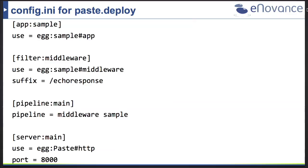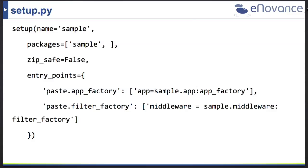For Python to know that we have an egg — for example 'sample' — and that there's a middleware included, we need a setup script. The most important part is having two entry points: one for the application itself and one for the middleware. If you look into Swift, you'll see a lot of entry points for each middleware there. If you're writing a middleware outside of Swift, you need something similar.